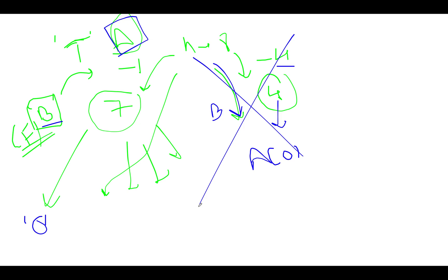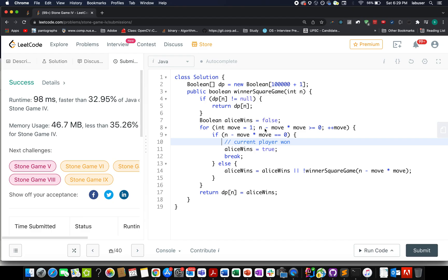The key insight is: if we can find any path from the top down to zero where the current player wins, we return true, and that player will choose that optimal direction. We can also see overlapping sub-problems — once a value is calculated for a particular index n, we can reuse it. This makes it a dynamic programming problem, and overlapping solutions are best handled with DP to reduce time complexity.